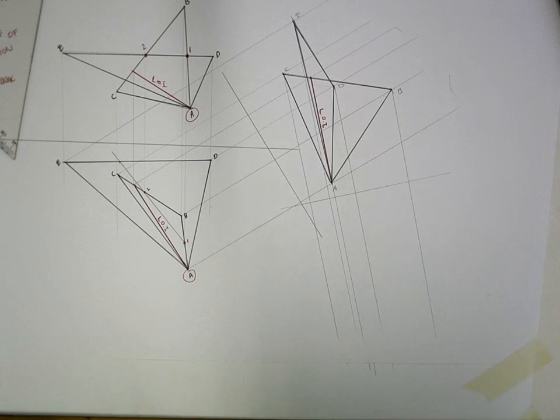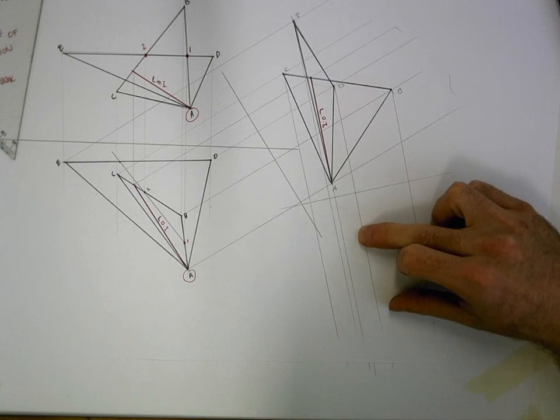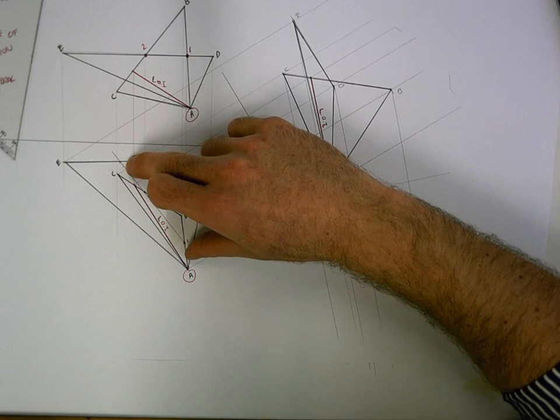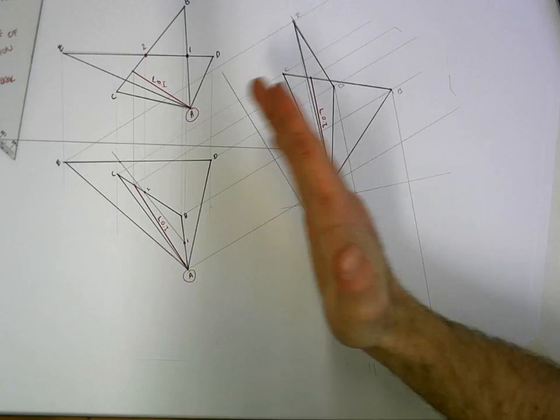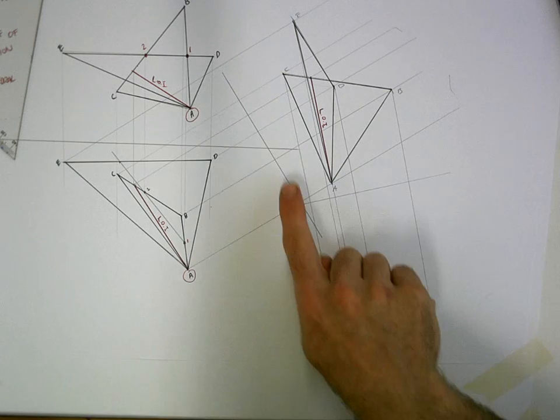So you have to remember your rule: go back two views. We're here in the second auxiliary. If I go back one, I'm in the first auxiliary. If I go back two, I'll be going down to the plan view. So we're measuring from the X1, Y1 line back down to the plan view. There's a lot of empty space there.